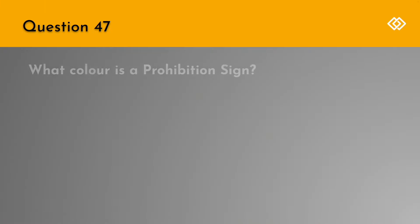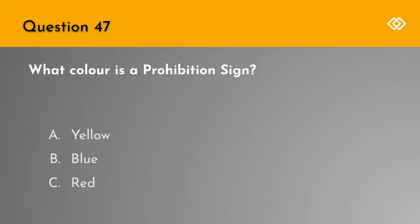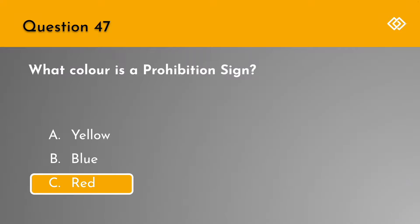Question 47. What colour is a prohibition sign? A. Yellow. B. Blue. Or C. Red. The correct answer is C. Red.